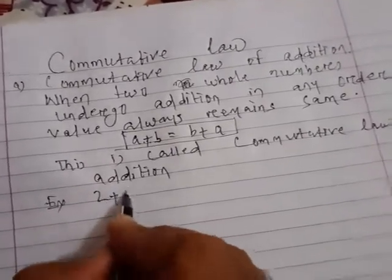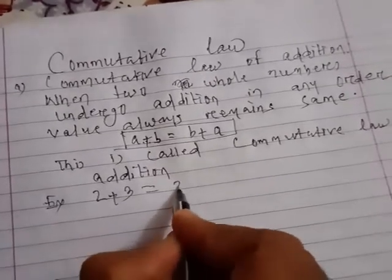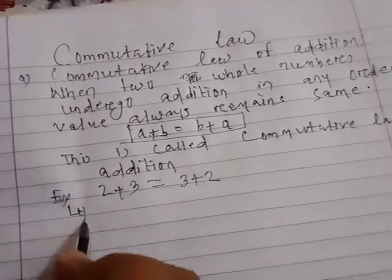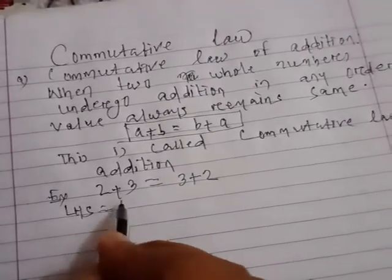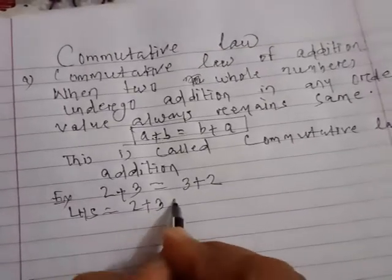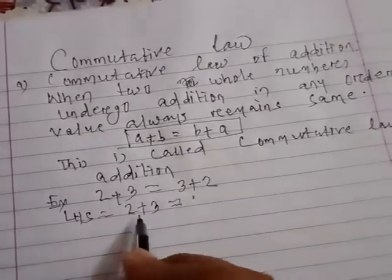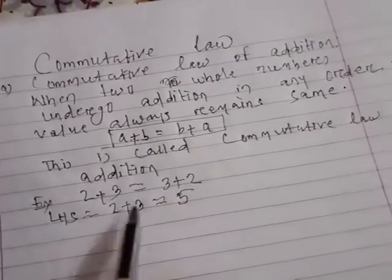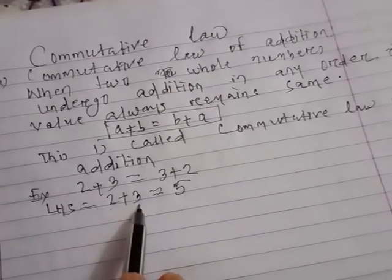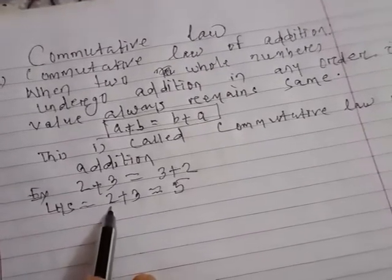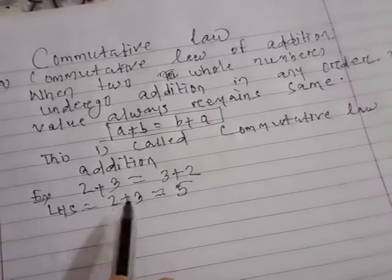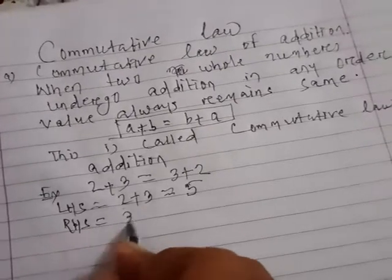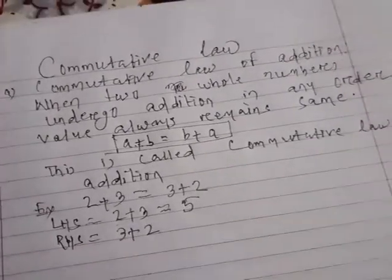For example, I will prove 2 plus 3 is equal to 3 plus 2. LHS — left hand side — what is 2 plus 3? It is 5. Here the first number is 2 and the second number is 3. RHS — right hand side — what is 3 plus 2?